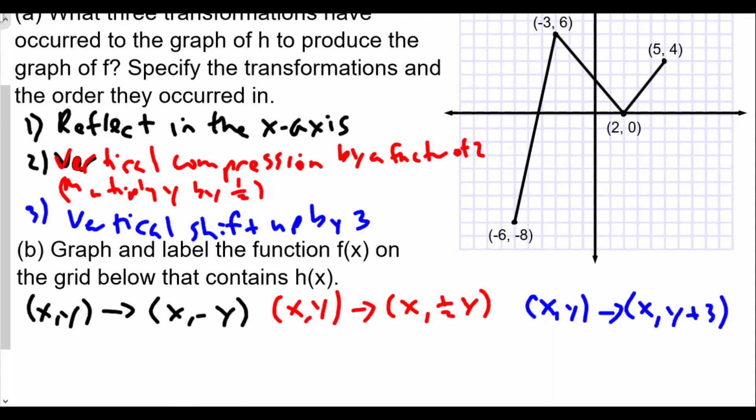Our very first coordinate is negative 6 comma negative 8. So negative 6 comma negative 8 will now become negative 6 comma positive 8. Now we take negative 6 comma positive 8, keep x the same, so it's negative 6 comma 1 half of 8 is 4. Finally, we take negative 6 comma 4 and add 3 to that, so it becomes negative 6 comma 7. This is our new coordinate here.